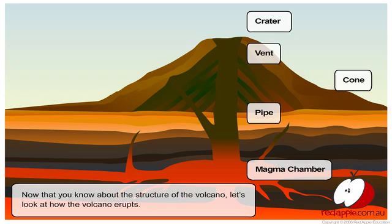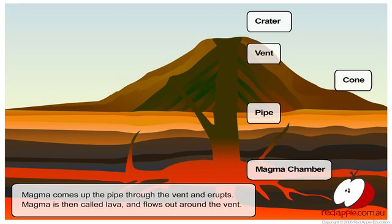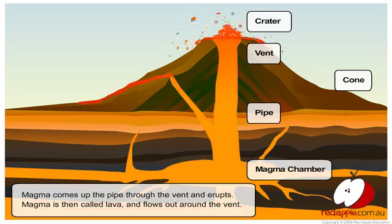Now that you know about the structure of the volcano, let's look at how the volcano erupts. Magma comes up the pipe through the vent and erupts. Magma is then called lava and flows out around the vent.